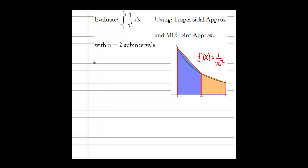Next is the trapezoidal approximation from an algebraic perspective. The function I'm starting with is 1 over x squared from 1 to 2. The area of a trapezoid, as learned in geometry, is the height times the average of the two bases — height times (base 1 plus base 2) over 2 — where the bases are the two parallel sides.